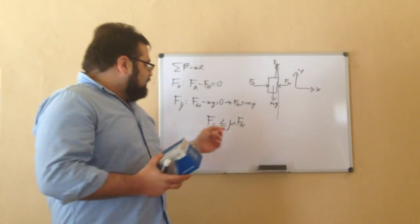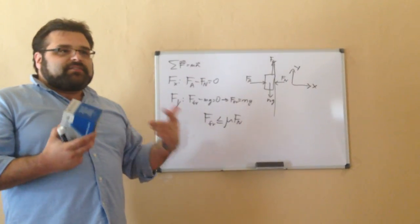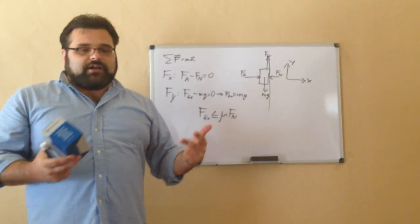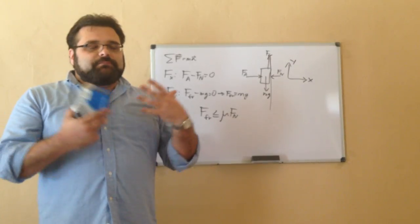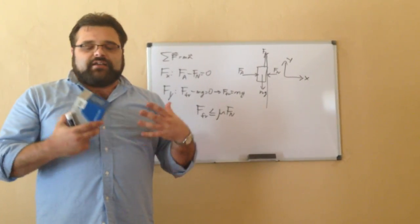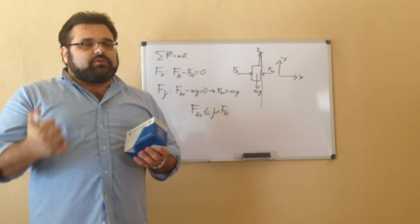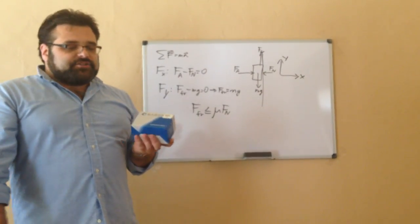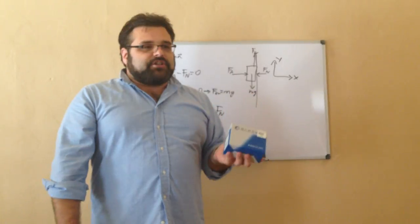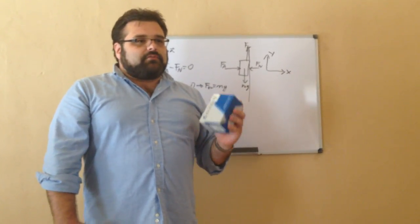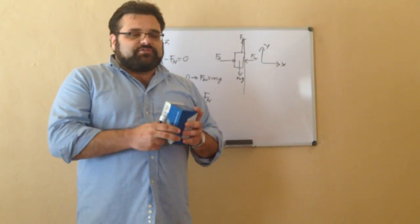Now, mu depends on the nature of the two objects that are in contact. There's no simple equation that can get mu for any object in general. You just have to do trial by error and see what works best. And at the end of the lecture, I'm going to do a little demonstration of how you can get mu for any pair of objects using a pretty simple experiment.